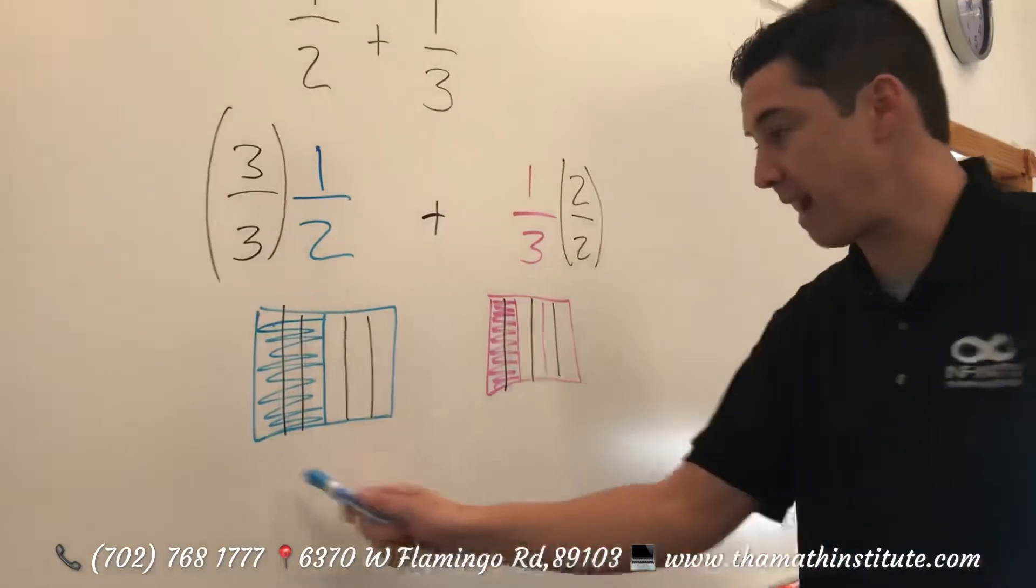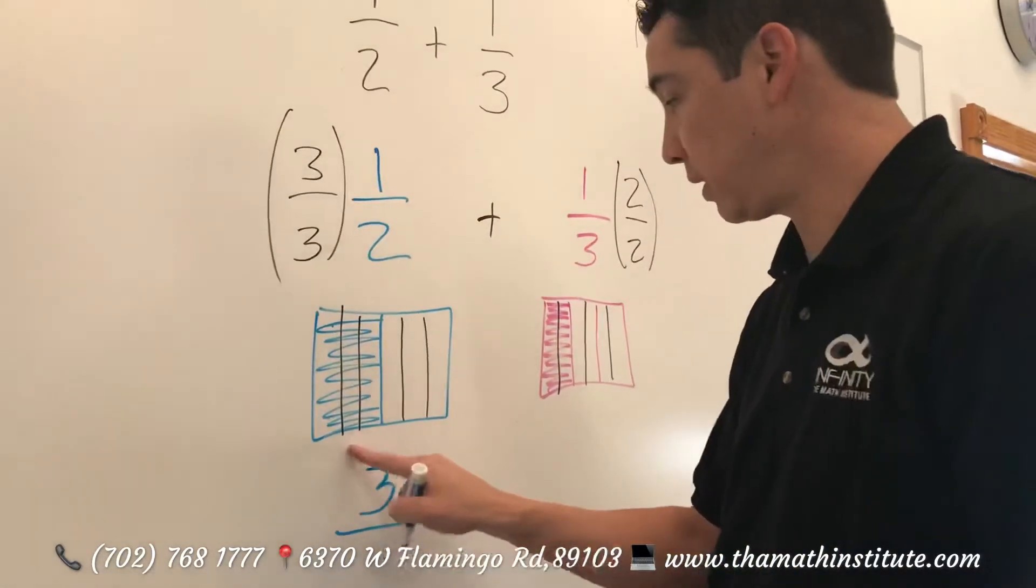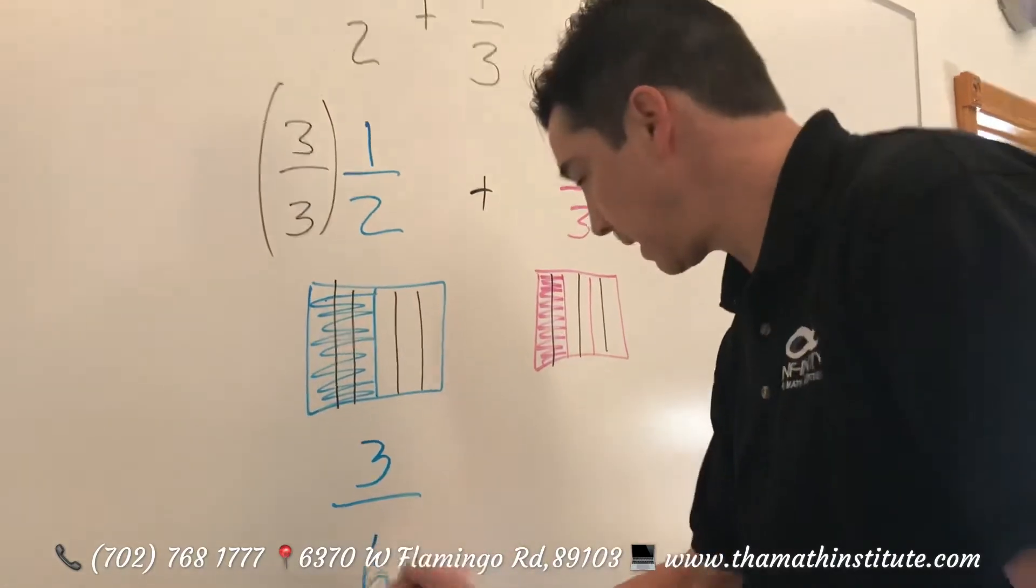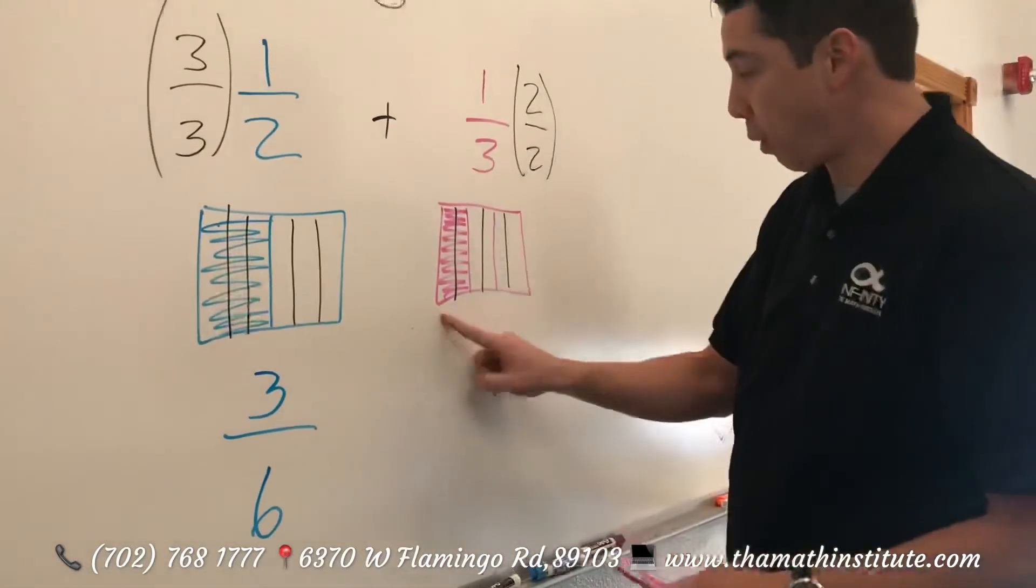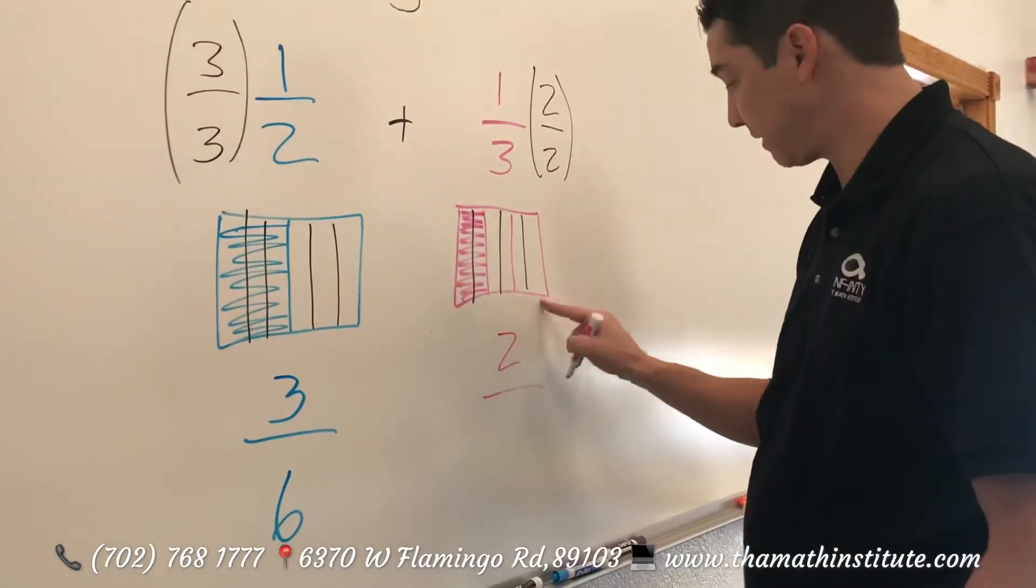And now we see we have one, two, three out of one, two, three, four, five, six. Over here we have one, two out of one, two, three, four, five, six.